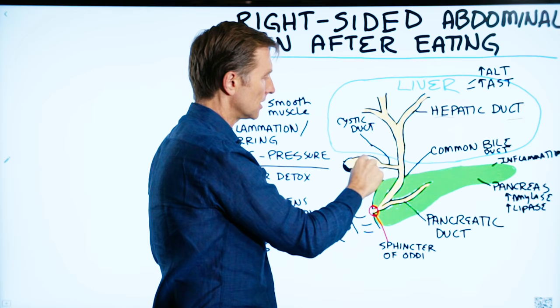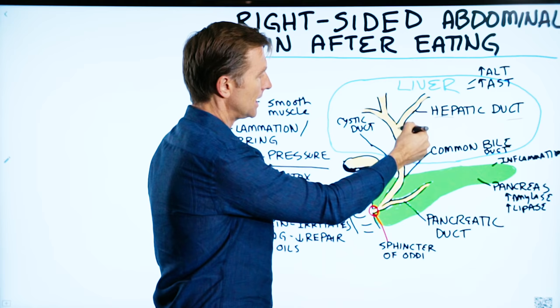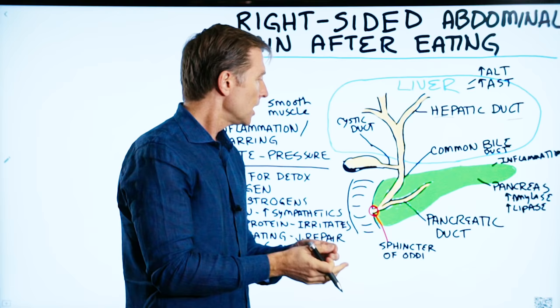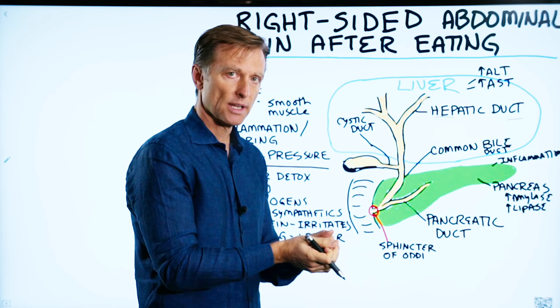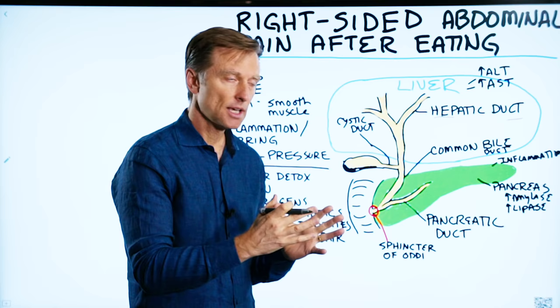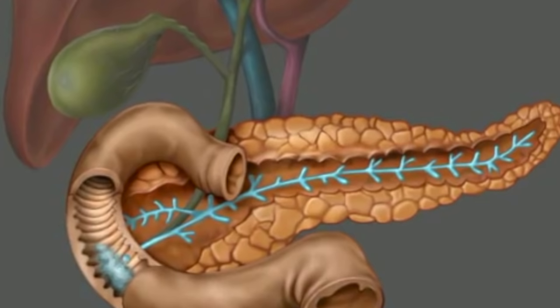The liver is making bile. Bile helps you digest fats, and it drains down this tube into the gallbladder where it's stored and concentrated. So when you eat, the gallbladder contracts and the bile comes out to help you digest food. Bile is like a detergent that helps you break down grease to a certain level, but the pancreas also releases lipase — an enzyme for fats — to help break it down 100%.